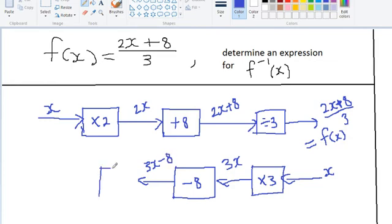And our last operation is the opposite of multiplied by 2, which is divide by 2. And so we will have 3x subtract 8 divided by 2.